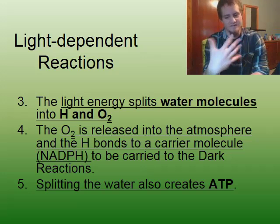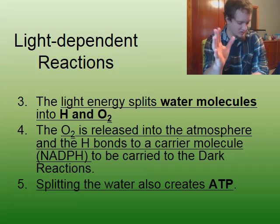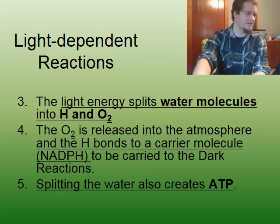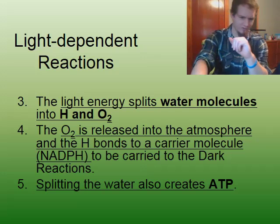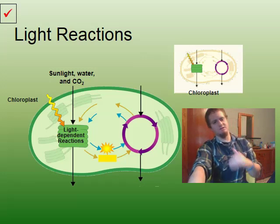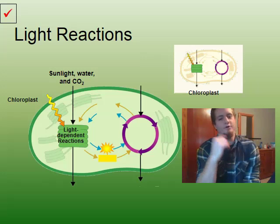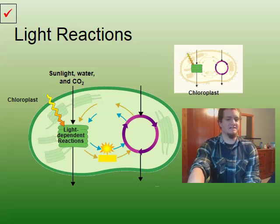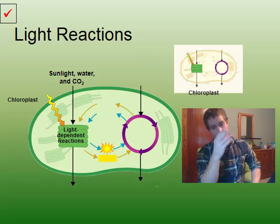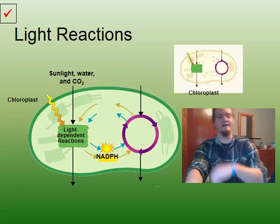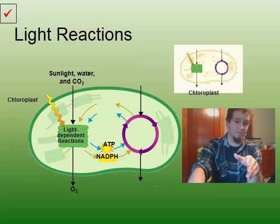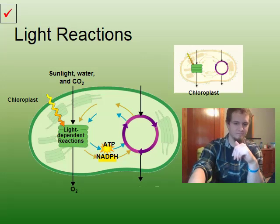The light-dependent reactions have these key steps, in a simplified version. Simply put, we have sunlight and water going into the chloroplast's light-dependent reactions — which occur inside the thylakoids. What we get out are the energy carriers NADPH, ATP, and oxygen is released. As we said, sunlight is needed for oxygen to be created or released from the plant.